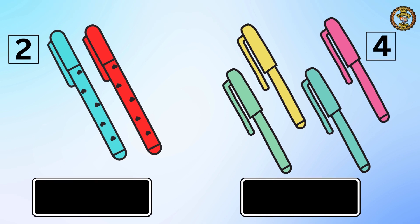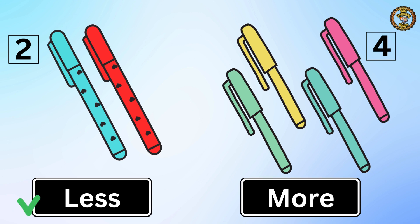Then we have two pens on the left and four pens on the right. Which one is less? You are right — two pens are less than four pens.